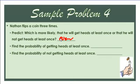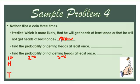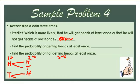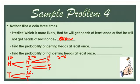Let's find the probability of getting heads at least once by drawing a tree diagram for three flips. First flip: heads or tails — two choices. Second flip: if you got heads, you can get heads or tails; same if you got tails. Third flip: each branch again splits into heads or tails.